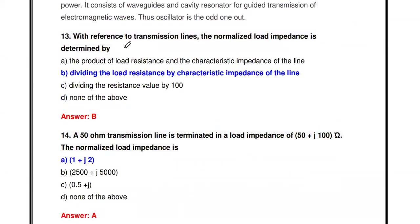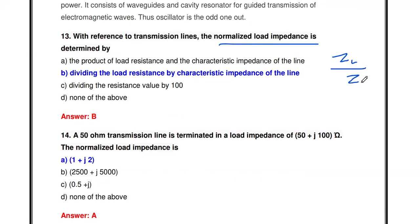With reference to a transmission line, the normalized load impedance is determined by dividing the load impedance ZL by the characteristic impedance Z₀. Dividing the load resistance by the characteristic impedance of the line is called the normalized load impedance ZLN.